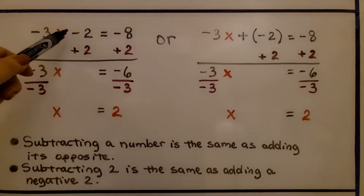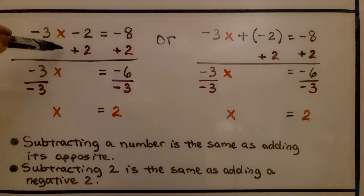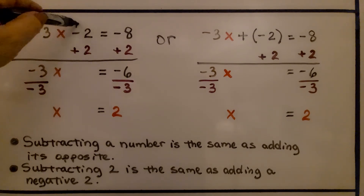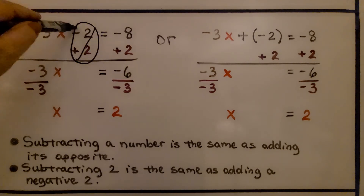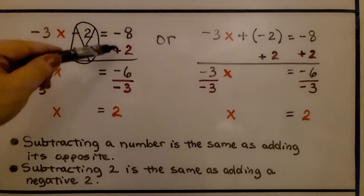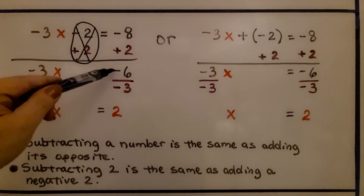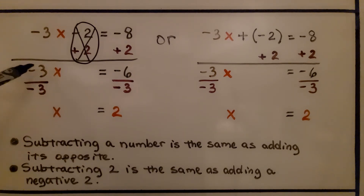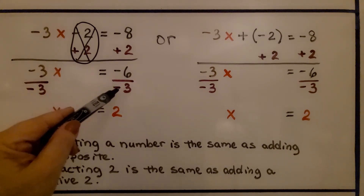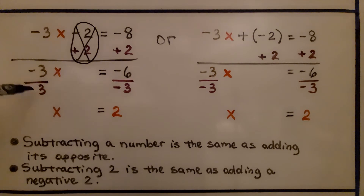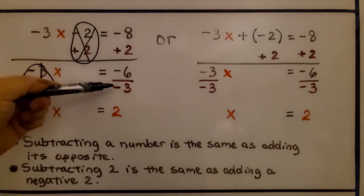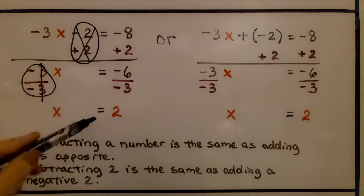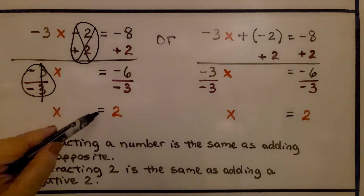We had negative 3x minus 2 is equal to negative 8. What we did was add a positive 2, which created a zero pair and eliminated the minus 2. When we add a positive 2 to this side of the equal sign, we get a negative 6. Now, to isolate x, we divide both sides by the coefficient negative 3. We divide by negative 3 on both sides. The numerator and denominator are the same, so that makes a 1. Here we have negative 6 divided by negative 3 — they're both negative, so our quotient is going to be positive. We get x is equal to 2.